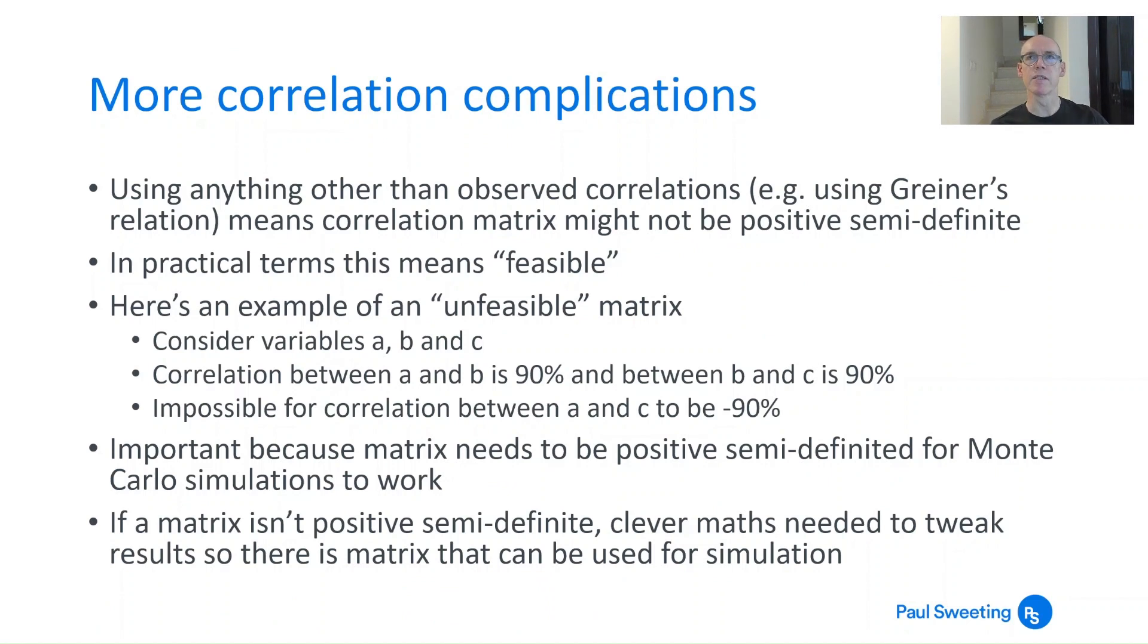This does though solve one problem, but it creates others. Because if you use anything other than observed correlations, so you use something like Griner's relation to work out what the correlations are, then you might end up with a correlation matrix which isn't positive semi-definite. And this essentially just means feasible, one which actually works in practice. If you think about those 10 asset classes and the 45 pairs of correlations that you've got, then there's a chance that not all of them are going to be consistent with each other.